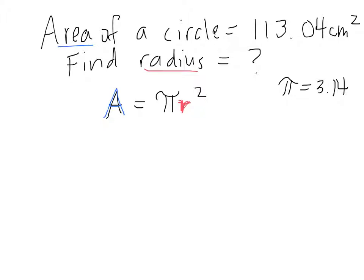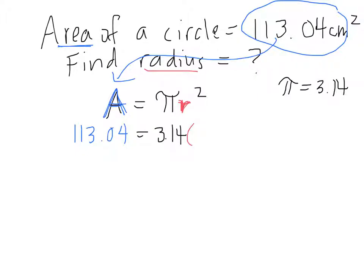This time we need to work backwards. Because we're given the area in this question, we're going to replace our variable A with its value. So 113.04 equals 3.14 times r squared.